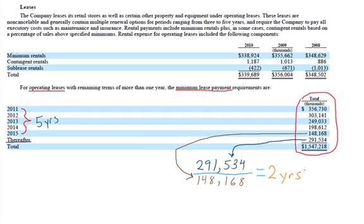So the present value of the $1,547,218 at 8.5% equals to approximately $1,197.6, nearly $1.2 billion of additional debt, which we're going to add to conventional debt.